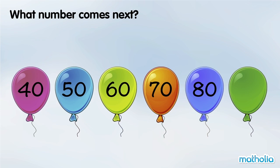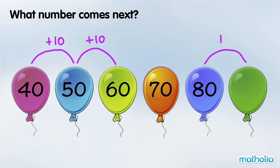What number comes next? 50 plus 10 is 60. In each step, the numbers go up by 10. 80 plus 10 is 90. The next number is 90.